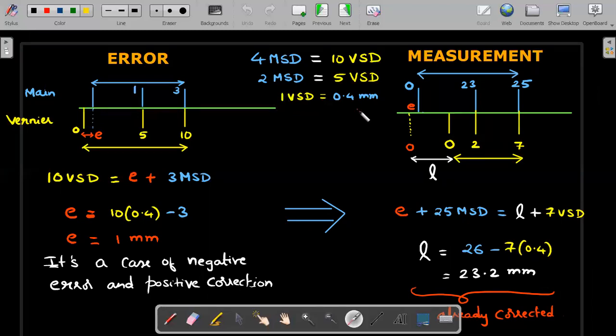At the top of the screen, I've taken the information given in the question. He said 4 main scale divisions is equal to 10 vernier scale divisions. I've reduced 2 as the GCD part, therefore 2 main scale divisions will coincide with 5 vernier scale divisions. I've substituted 1 MSD is 1 mm as given, then each VSD is 0.4 mm.